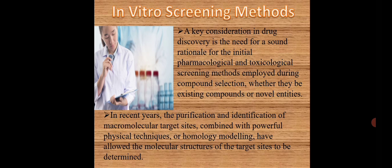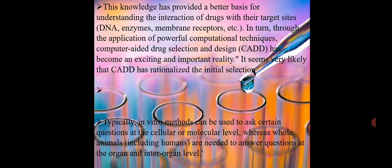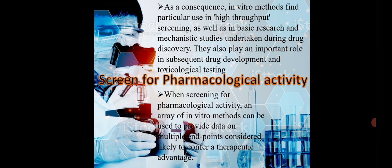In vitro screening methods. What are the key consideration? The key consideration could include pharmacological or toxicological screening methods. This is basically used for novel entities, the novel drug delivery system. Now in the recent year, purification or identification is very important for all the micromolecules. We use the in vitro studies for the physical techniques. And further use, it could be in the DNA enzyme testing, target. You must have heard about CAD, computer-aided drug selection and design. This is very important. This is a computational technique which is going to help us know the entity, the molecule. Typically, in vitro methods can be used to ask very certain questions and these questions are always based upon inter-organ level.